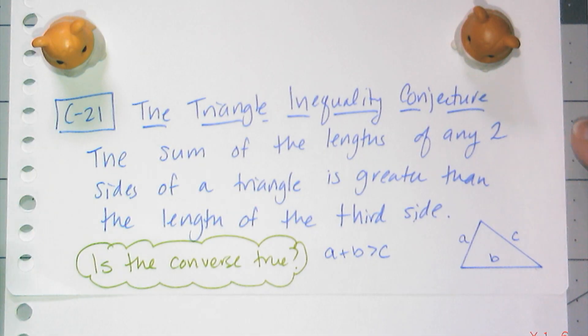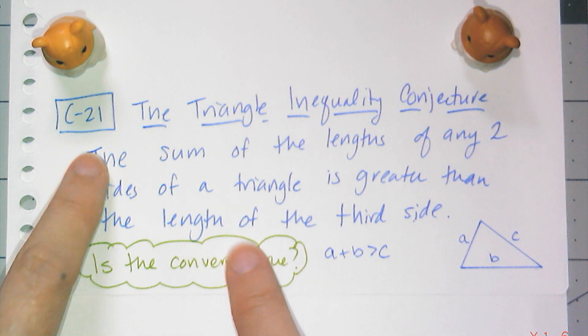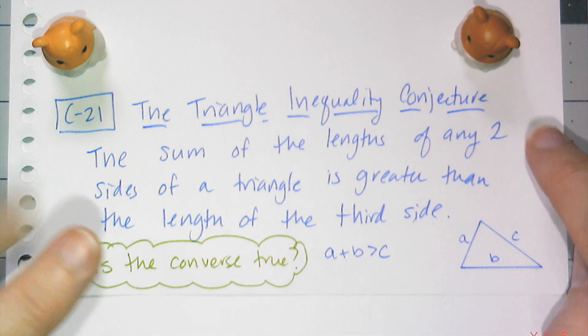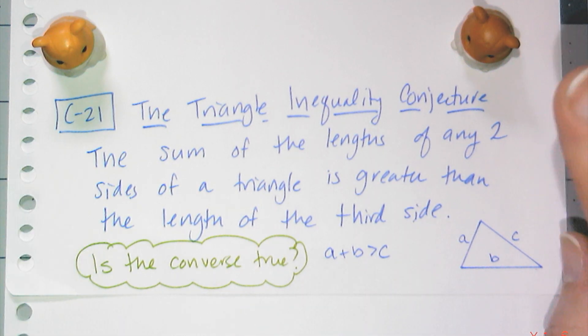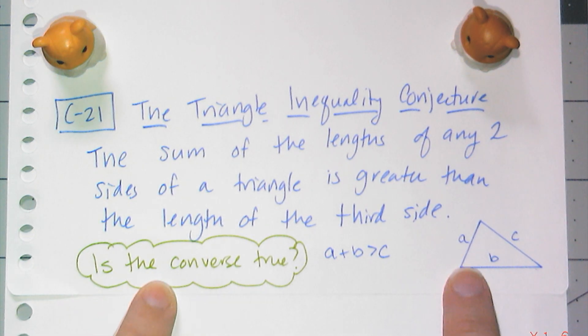The triangle inequality is conjecture 21. It says the sum of the lengths of any two sides of a triangle is greater than the length of a third side. And I have a little drawing accompanying it. I have a little triangle, A, B, C are the side lengths, and A plus B has to be greater than C.